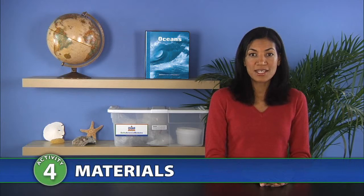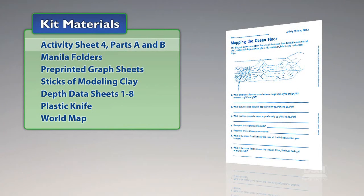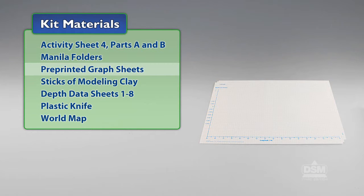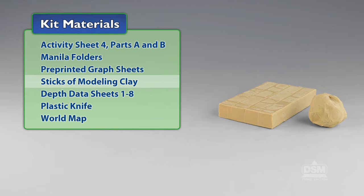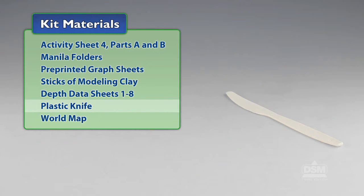You will need the following materials from the kit: Activity sheet 4 parts A and B, manila folders, pre-printed graph sheets, sticks of modeling clay, depth data sheets 1 through 8, plastic knife, and a world map.